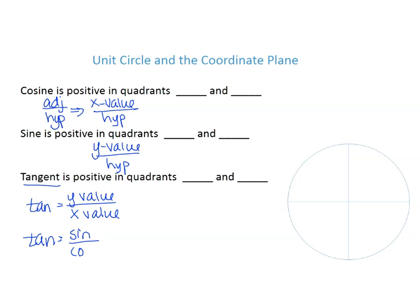In other words, tangent is sine over cosine. Sine and cosine both have the same denominator because they're in the same circle — the same hypotenuse. So tangent is sine over cosine, and since we're not worried about the denominators, we can just say the y value over the x value of the point where that angle terminates on the circle.